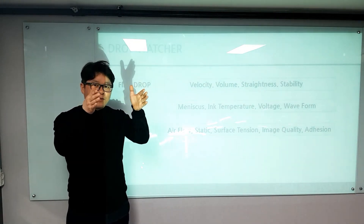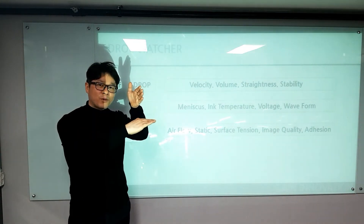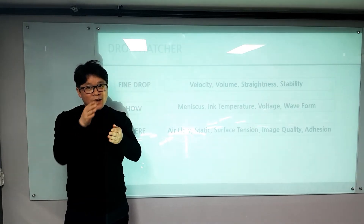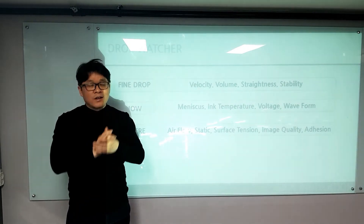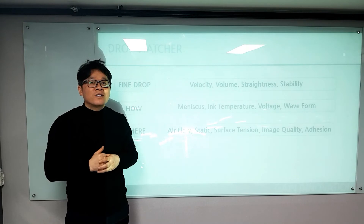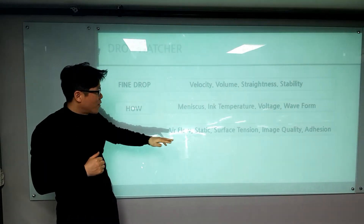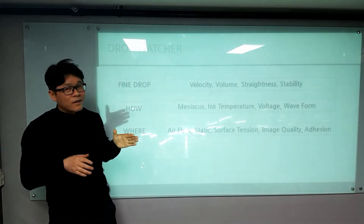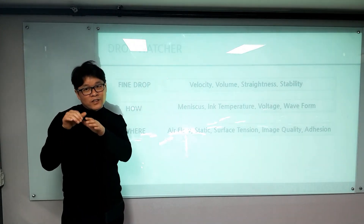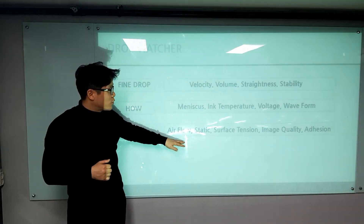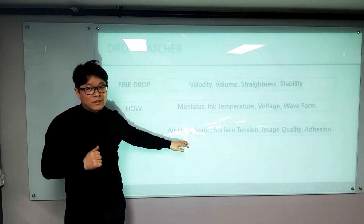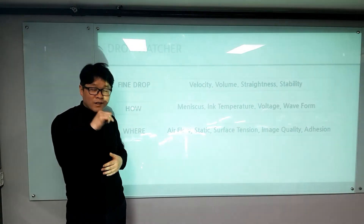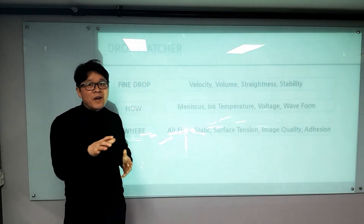The two methods are: head-carriage fixed with media transport, or media fixed with head-carriage moving. During those movements, airflow disturbance occurs and it affects jetting. So we need to control those two factors first. After that, we print on the real media.